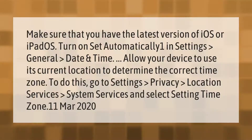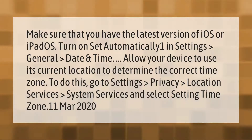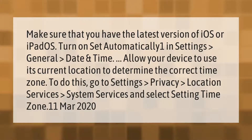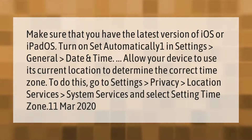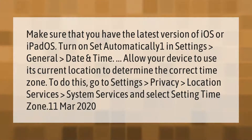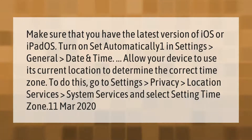Make sure that you have the latest version of iOS or iPadOS. Turn on Set Automatically in Settings > General > Date and Time. Allow your device to use its current location to determine the correct time zone — go to Settings > Privacy > Location Services > System Services and select Setting Time Zone.